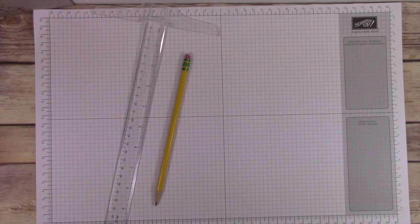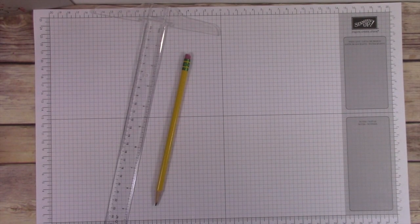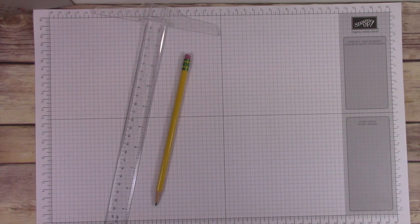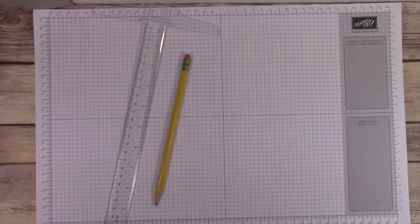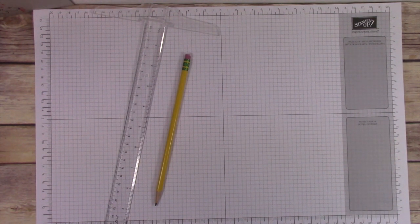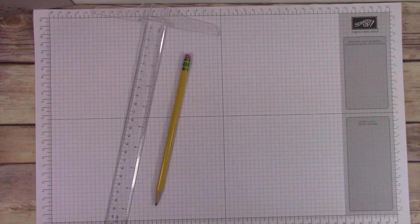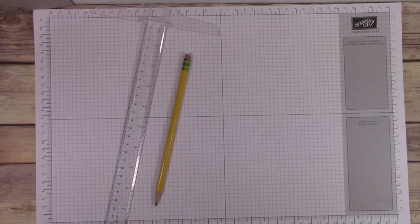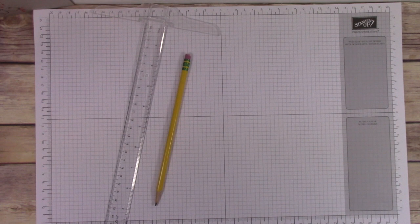Hey guys, today we're going to make a really cute banner. I saw this from Stampin' Up and I'm going to share with you how I created it. The first thing you need is a piece of grid paper, a ruler, and a pencil.